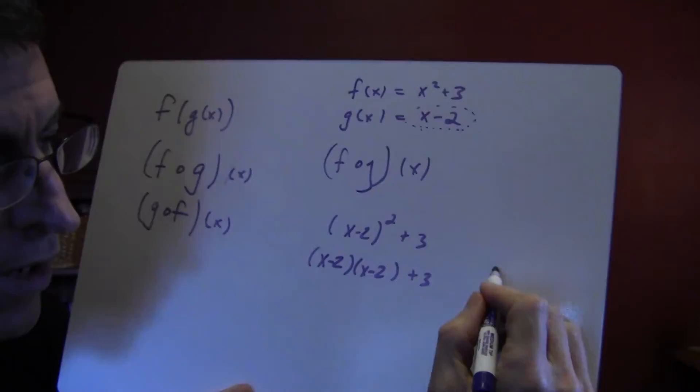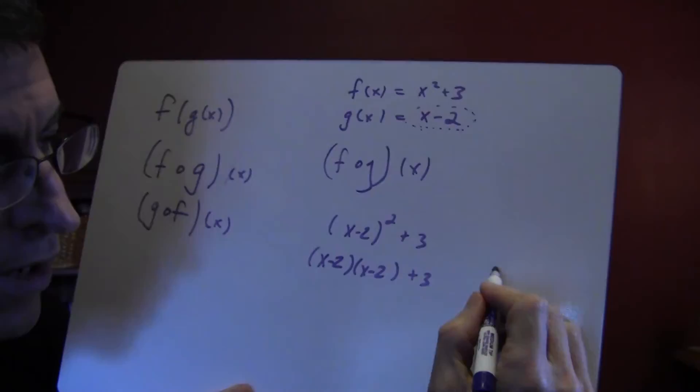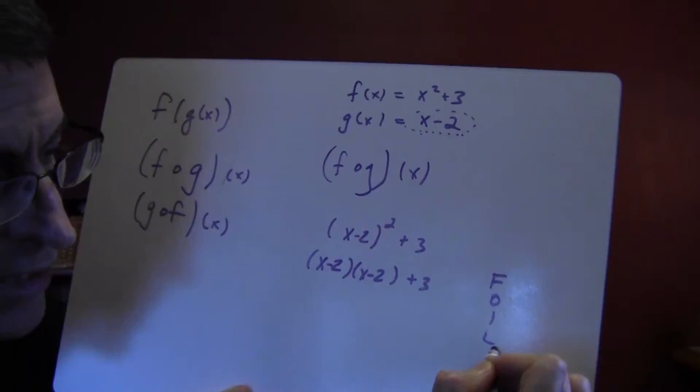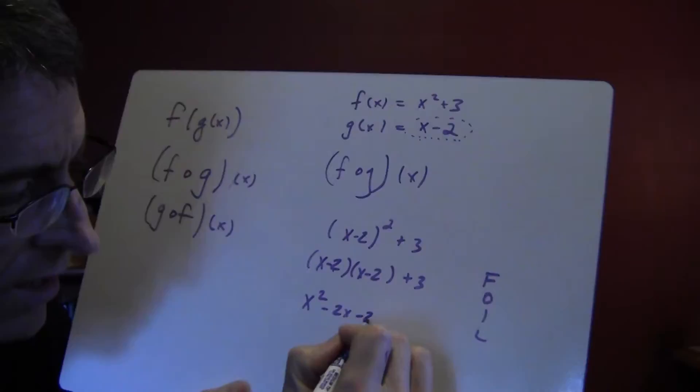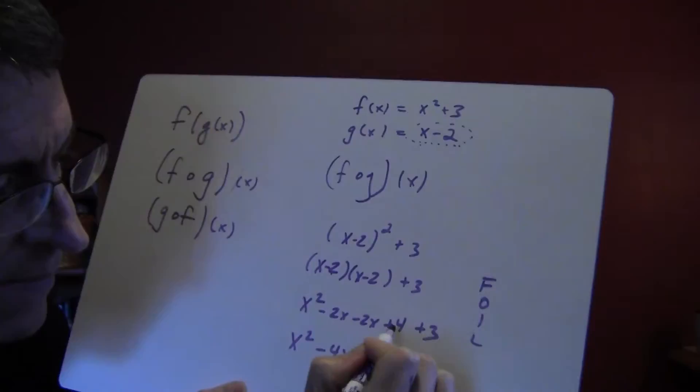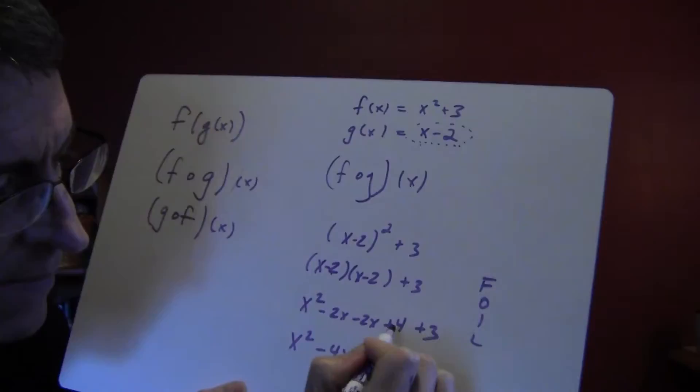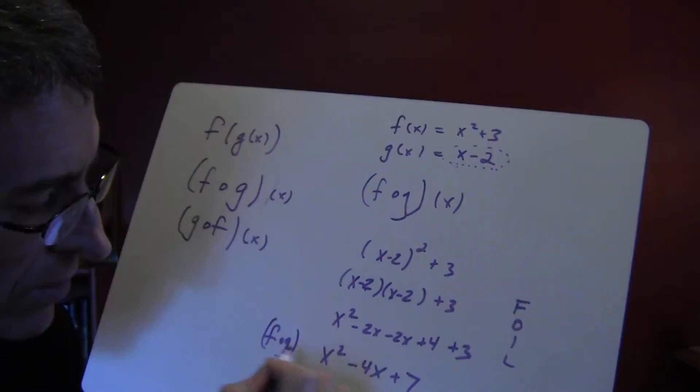So, we have to write it out. x minus 2 times x minus 2 plus 3. Now, remember your FOIL. That's your first term, outside term, inside term, and last term. So, the first term is x times x is x squared. The outside term is x and negative 2. So, that's negative 2x. The inside terms are negative 2 and times x. That's another negative 2x. And then, the last terms are negative 2 times negative 2 which is positive 4 plus 3. So, x squared minus 4x because those two combine plus 7. That would be the composition between f and g without evaluating or anything else.